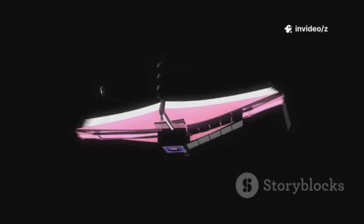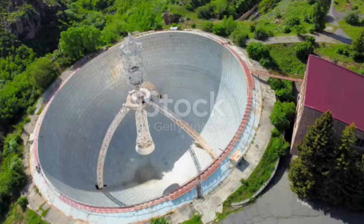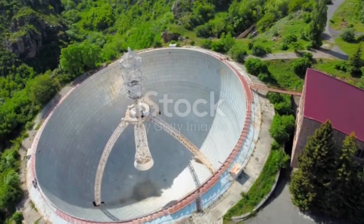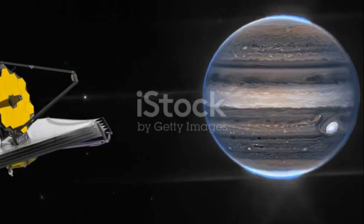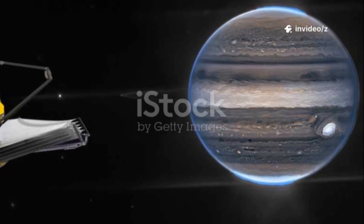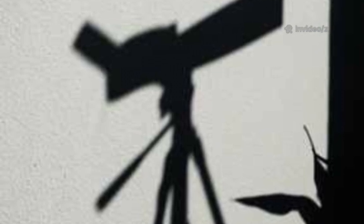From this remote outpost, Webb began sending back images that would upend our understanding. It's a golden eye staring into the dawn of time. Webb's design is a marvel of human ingenuity, folding and unfolding like cosmic origami. The telescope's cold, dark vantage point is perfect for unlocking secrets long hidden from view.